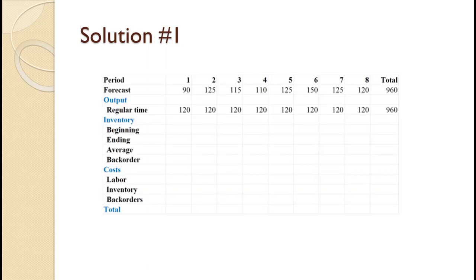The planning grid is shown on the slide with 120 scheduled in regular time production. Since overtime and subcontracting will not be used in this problem, those production and cost lines have been removed to simplify the planning grid. Since you have seen an example already, let me suggest that you pause the video and try to work this problem on your own. Once you are done, you can use the video to check your work and spot any mistakes you might have made.